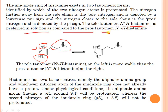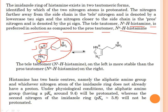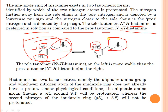The tau tautomer of histamine is preferred in solution compared to the pros tautomer, that is N-pi-H histamine. The tau tautomer (N-tau-H histamine) on the left is more stable because that nitrogen is protonated while the other nitrogen is not protonated. In the pros tautomer, the nitrogen denoted by the pi sign is protonated and is closer to the ethylene bridge — that is why it is called the pros tautomer.